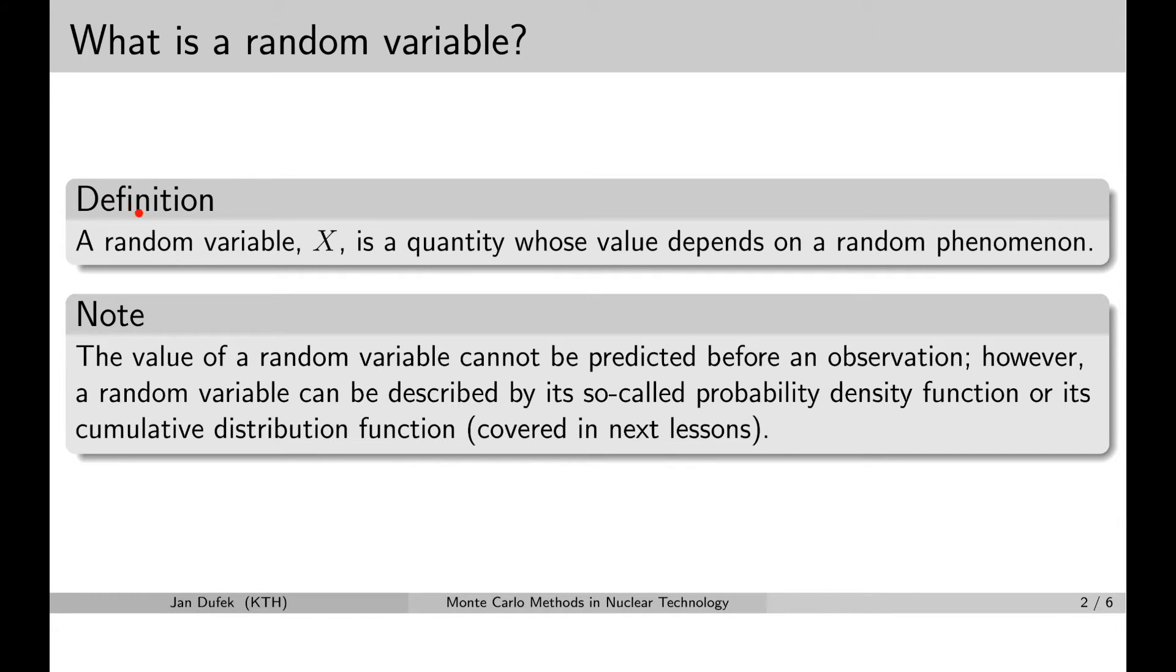The definition of the term random variable is very simple. It simply says that a random variable, that I denote by capital X here, is a quantity whose value depends on a random phenomenon, on a random process.